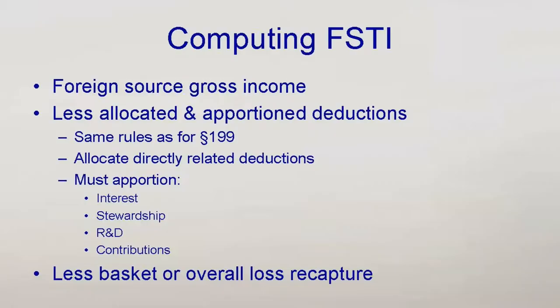The foreign tax credit limitation is based on net foreign source taxable income after deductions in each basket. Other things are also based on subsets of net taxable income. So we need to get from identifying income to net taxable amounts. To do so, we need to associate deductions with particular sets or classes of income.